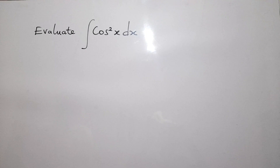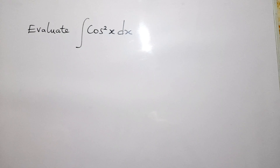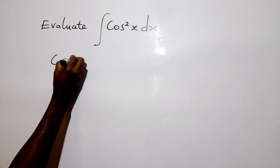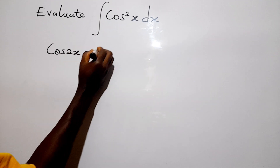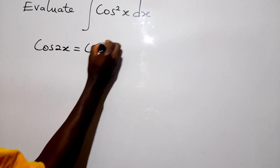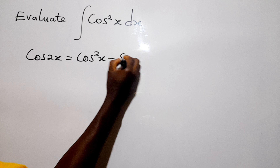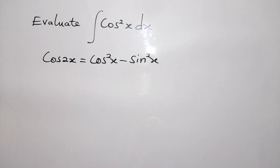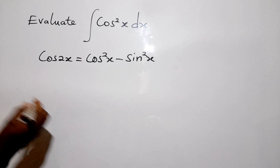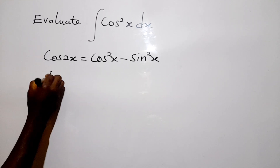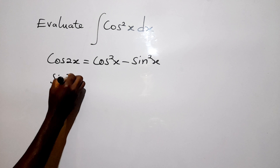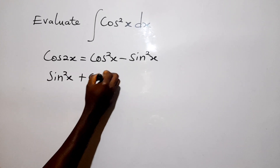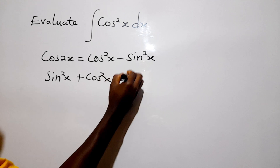So remember from trigonometry, and from double angle formulas, we say cos 2x is equal to cos squared x minus sine squared x. This is gotten from compound angles. Also we know that sine squared x plus cos squared x is equal to one.